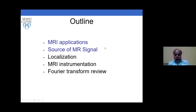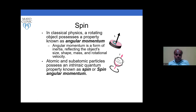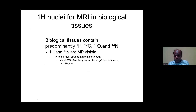How do we generate MRI? In our body we have protons that act like a spin. In classical physics, a rotating object possesses angular momentum. Our body has hydrogen atoms — water constitutes most of the body and contains hydrogen. Biological tissues contain predominantly hydrogen, carbon, oxygen, and nitrogen. Hydrogen is the most abundant atom in the body — about 60% by weight — with water containing two hydrogen and one oxygen.